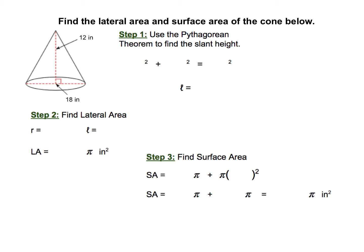For our last example of finding the lateral area and the surface area of a cone, you'll notice that this time we do not have the slant height. The slant height would be this height right here along the side of the cone. What we have instead is we have the actual height of the cone, which is 12, and we have the diameter of the circular base here of 18.